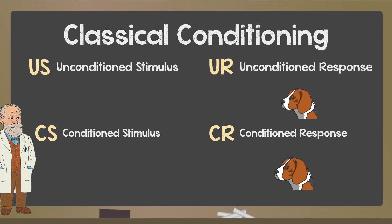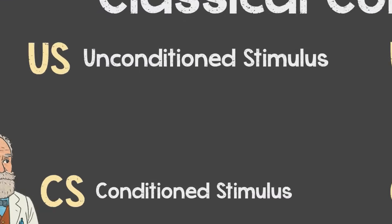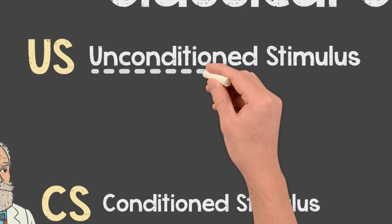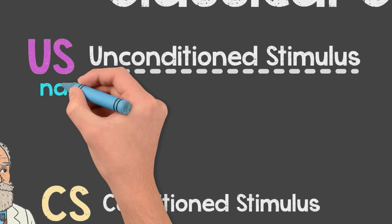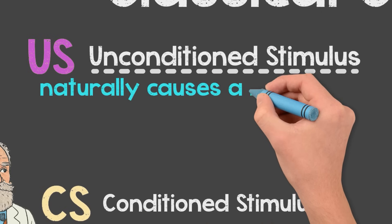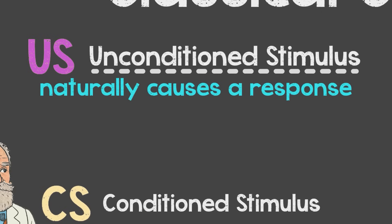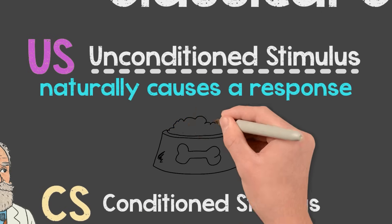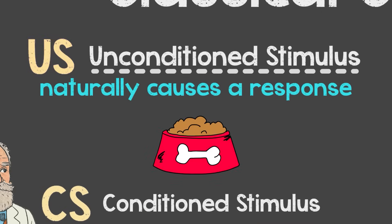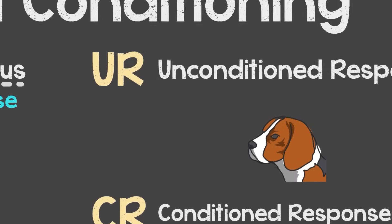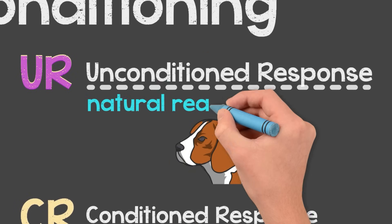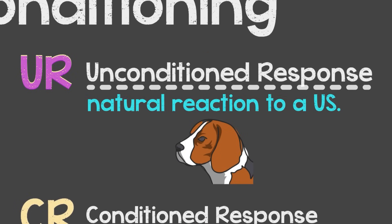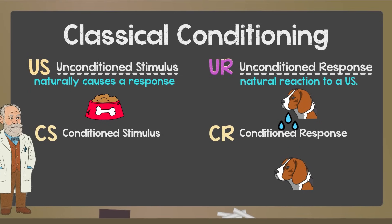First, the unconditioned stimulus, or US — that's something that naturally causes a response without any learning. In Pavlov's case, it was the food. Next, the unconditioned response, or UR — that's the natural reaction to the food: salivation.